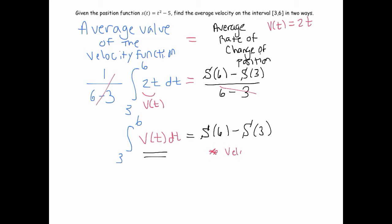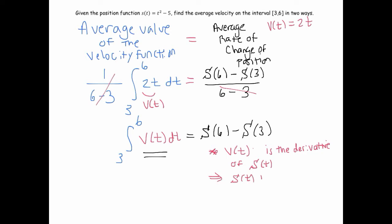So velocity v(t) is the derivative of s(t), which means we can say that s(t) is an antiderivative of v(t).